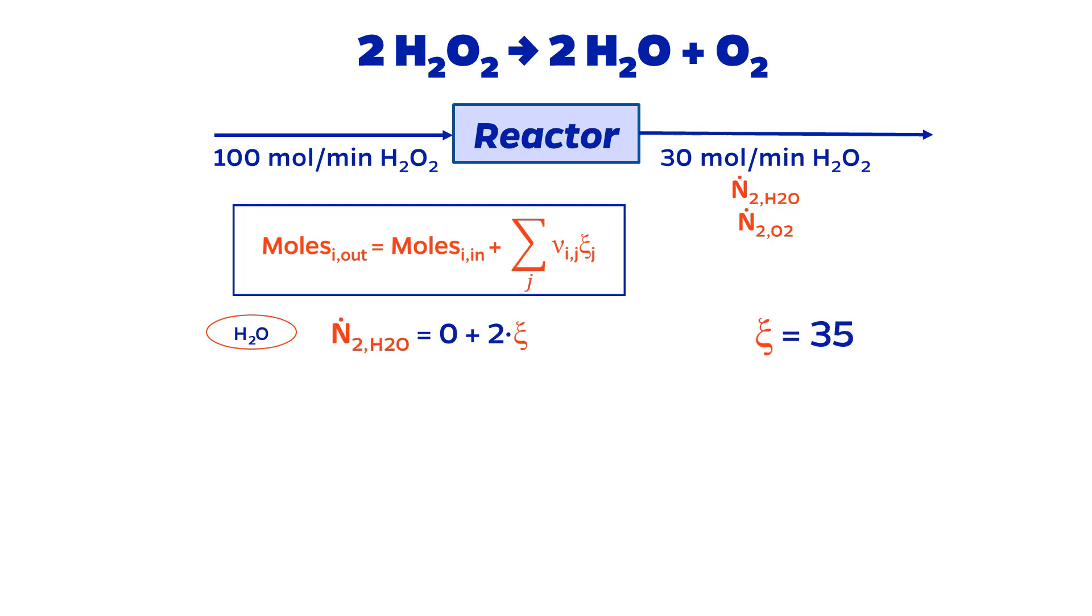Moving on to water, the exit flow rate is our unknown variable, N2H2O. This equals 0 since no water enters, plus 2 times squiggle because the stoichiometric coefficient is positive 2. Plugging in the value for squiggle that we got from before, the exit flow rate of water is 70 moles per minute.